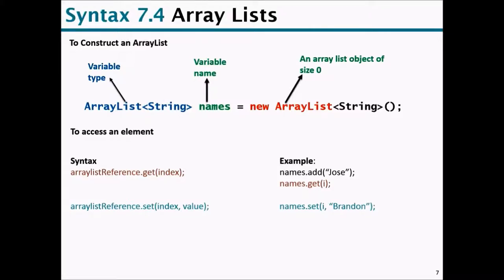To access an element from an ArrayList, use the get method. For example, to get a value at index i, invoke names.get(i). Keep in mind that 'names' is the ArrayList reference, not the actual ArrayList itself. To add a value first, you can say names.add("Jose"), which adds the name Jose to the list.